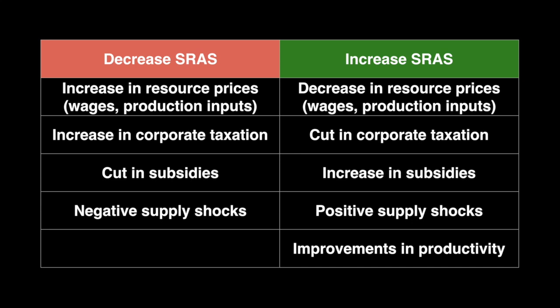On the other side of this, we can see how changes in the opposite direction will increase short-run aggregate supply. A positive supply shock could include the discovery of a domestic source of oil, which would increase its supply and in turn reduce the market price.